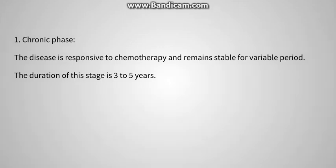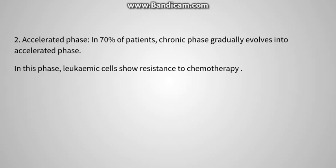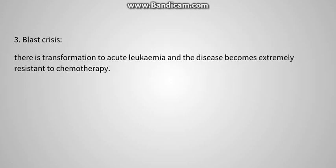Around 70% of patients enter the accelerated phase, where symptoms are worse and leukemic cells show resistance to chemotherapy. Then there is blast crisis, where CML is transformed into acute leukemia — no longer chronic. The disease is extremely resistant to chemotherapy and the prognosis is bad in this stage.